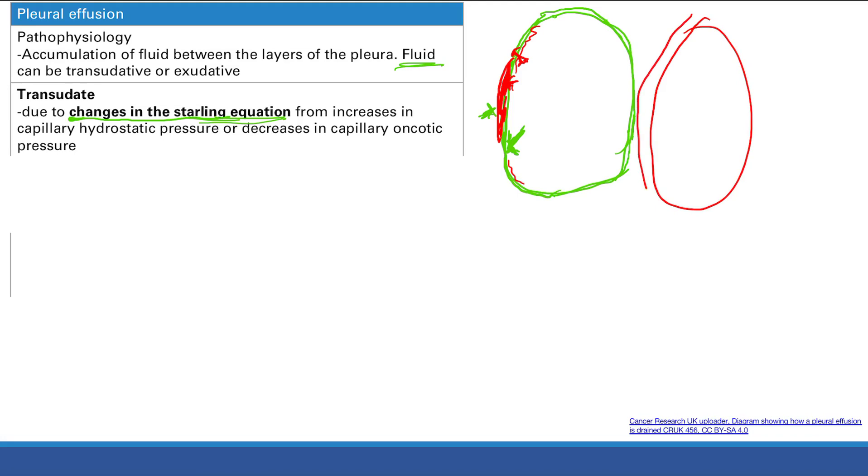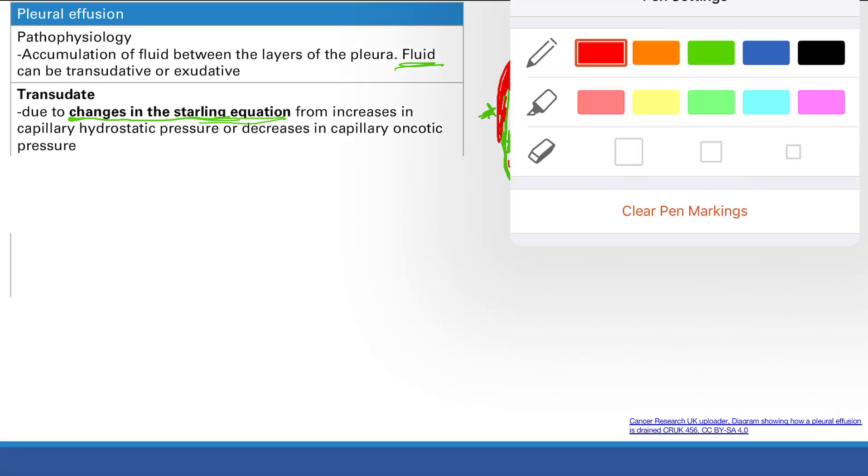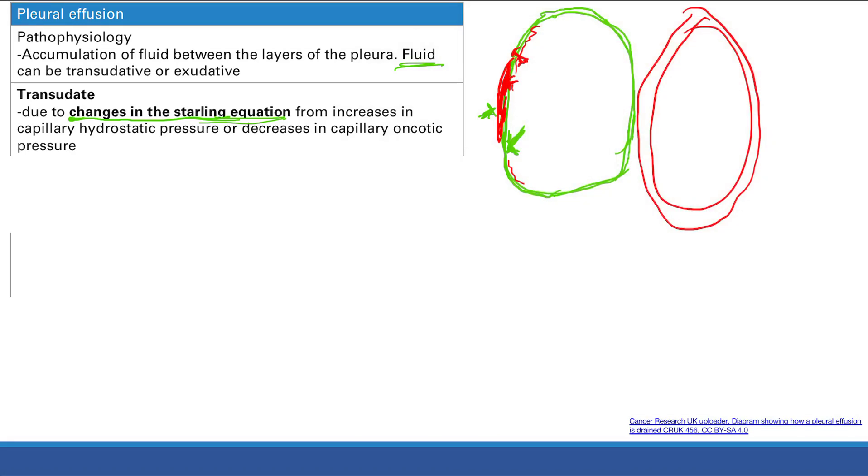This is one layer of the pleura, and then now you have a second layer of the pleura, and it's going to be filled with fluid. Okay, let's color it. So it's filled with fluid now in between the two pleural layers.